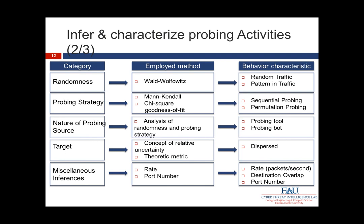The behavioural identification works across different types of behaviours. First is randomness — in terms of what ports are being scanned and where traffic is coming from. The method used for that is the Wald-Wolfowitz method, and we identify whether the behaviour is random or has a pattern. We then look at the probing strategy using both the Mann-Kendall method and the G-squared goodness-of-fit method — all referenced in the paper. From that we identify whether there is sequential probing or permutational probing.